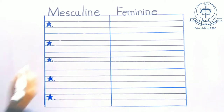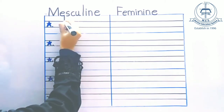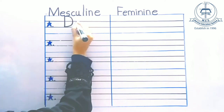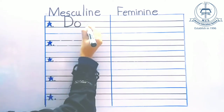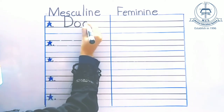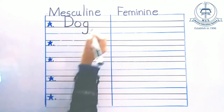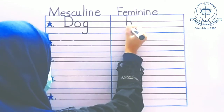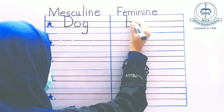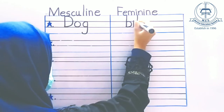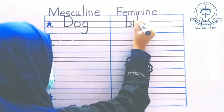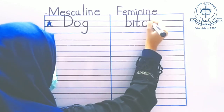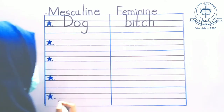Masculine, feminine. D, O, G — dog. B, I, T, C, H — bitch.